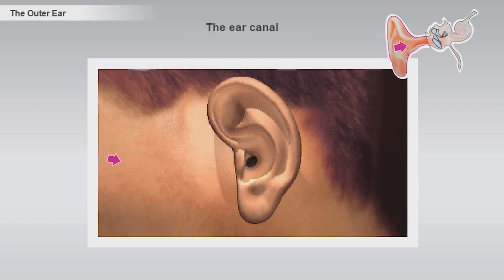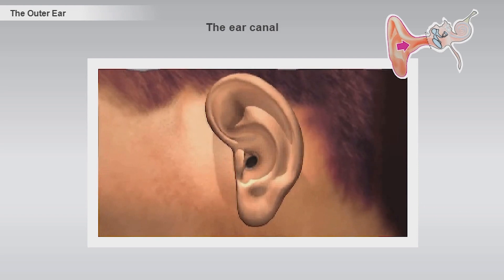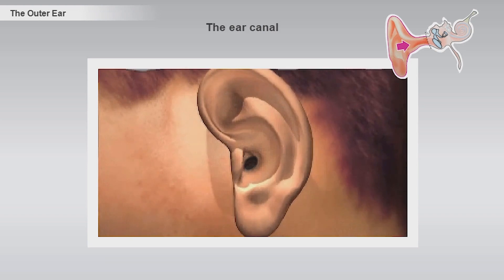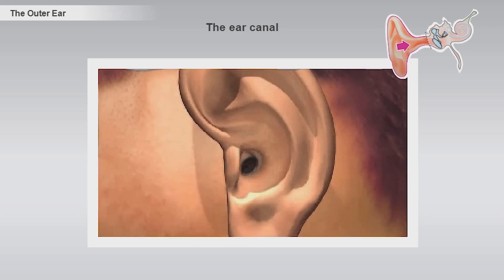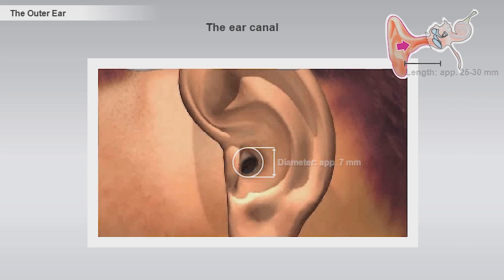The entrance to the ear canal is just in front of the center of the outer ear. The ear canal is a small tube-shaped cavity that extends from the outer ear to the eardrum. It has a diameter of approximately 7 millimeters and a length of about 25 to 30 millimeters. Since the ear canal bends, it is not possible to see the eardrum from the outside.